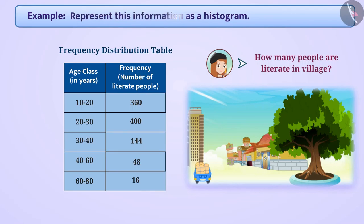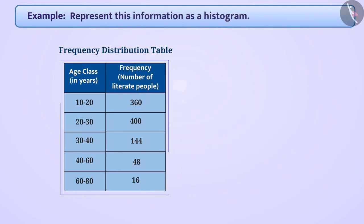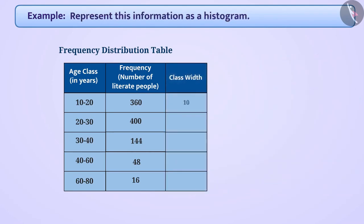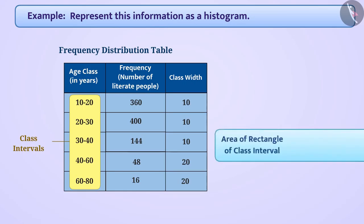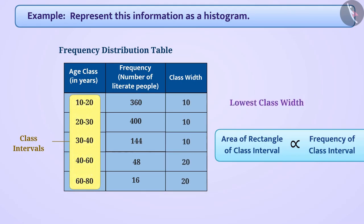Can you represent this information as a histogram? In the given table, the width of all class intervals is not the same. Here we have to make suitable changes in the lengths so that the area of rectangles is proportional to the frequency of the class interval. For this, we will first find the width of each class interval and choose the lowest class width, which is 10.